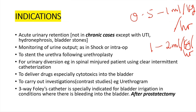The catheter can also be used to deliver drugs, especially cytotoxic agents, into the bladder, and to carry out investigations such as contrast studies like retrograms. Three-way Foley catheter is specially indicated for bladder irrigation after conditions where there is bleeding into the bladder — to prevent clot formation by irrigating with normal saline through the irrigation channel, or after open prostatectomy to prevent hematuria and clot retention.